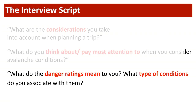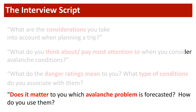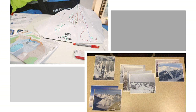We had a section of the script which explored the importance of danger ratings to people. We had people say what sorts of conditions come to mind when they think of the words 'moderate,' 'considerable,' and 'high.' And we had some fascinating discussion about the avalanche problems — how do people perceive the problems, how do they use them, and do they find them confusing?